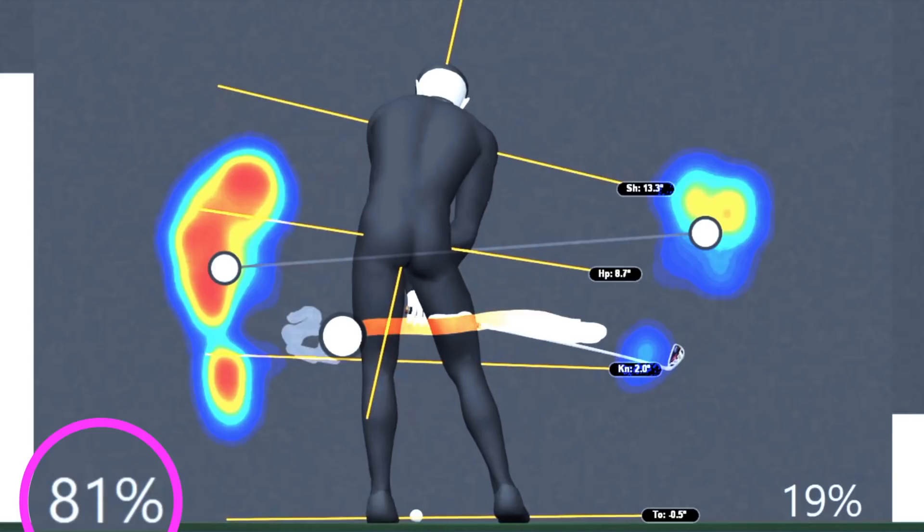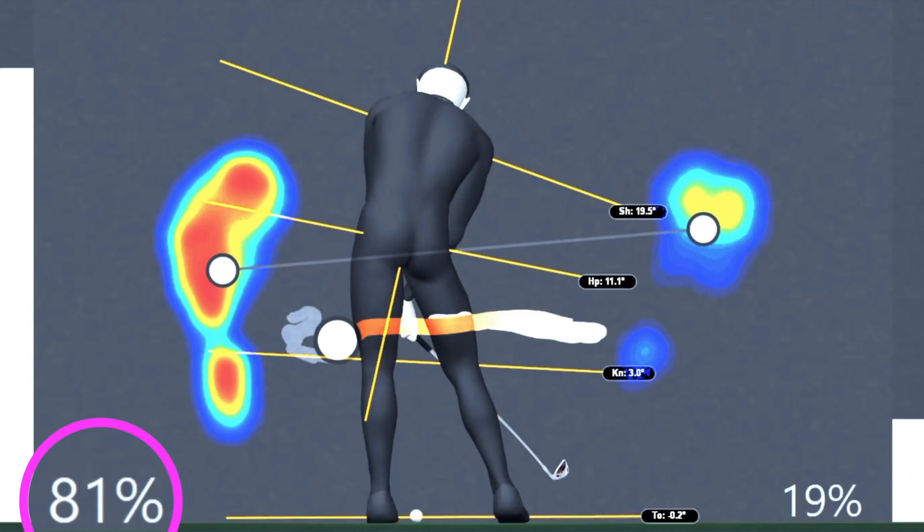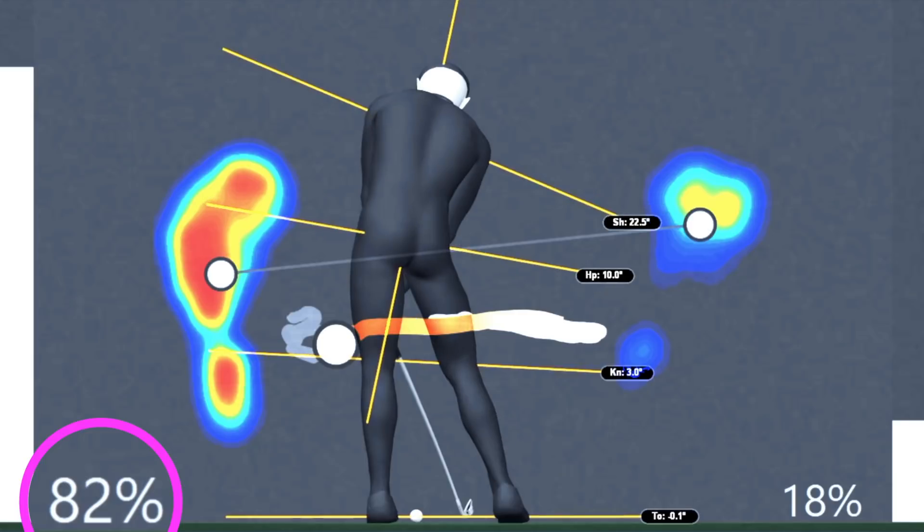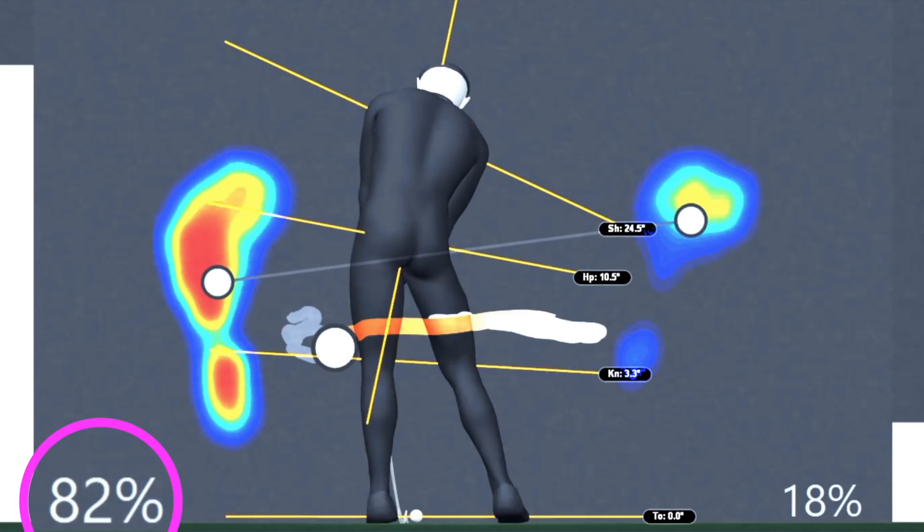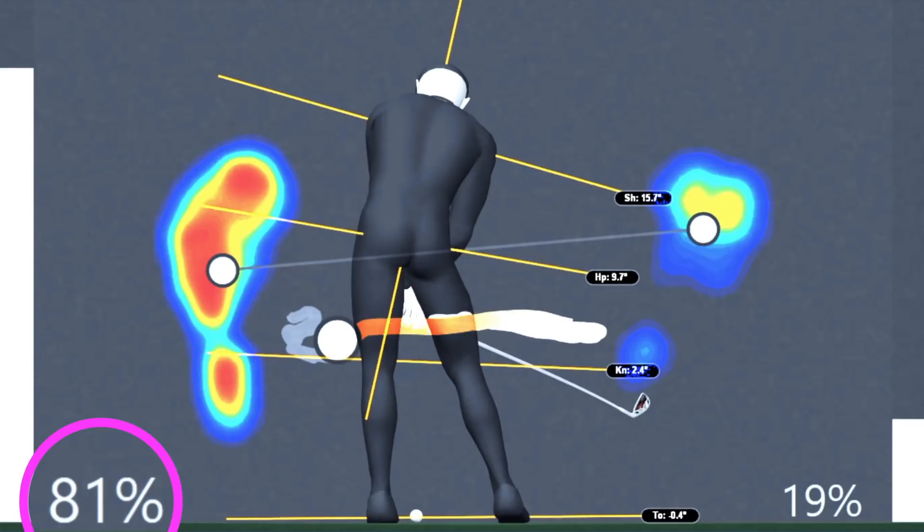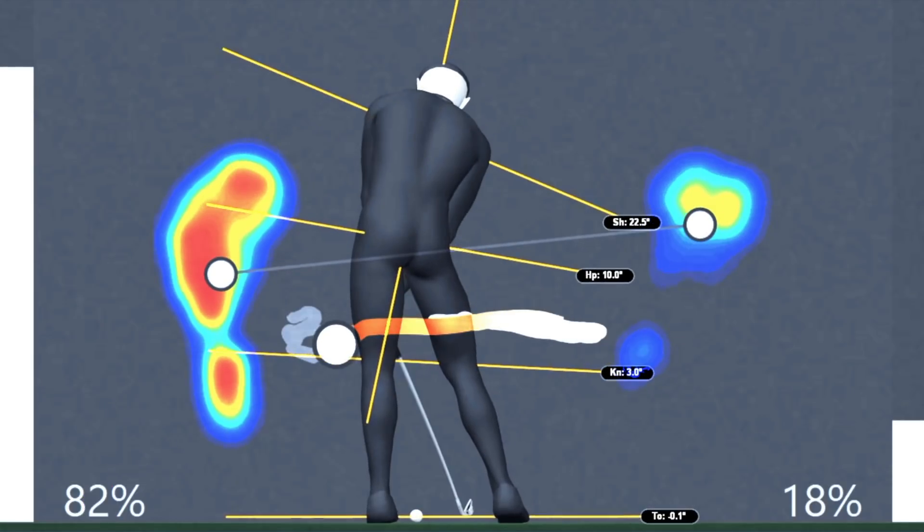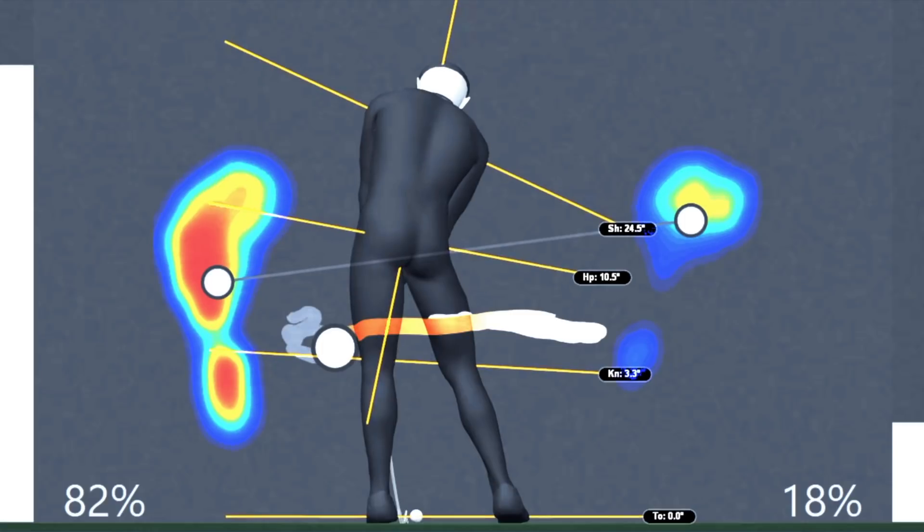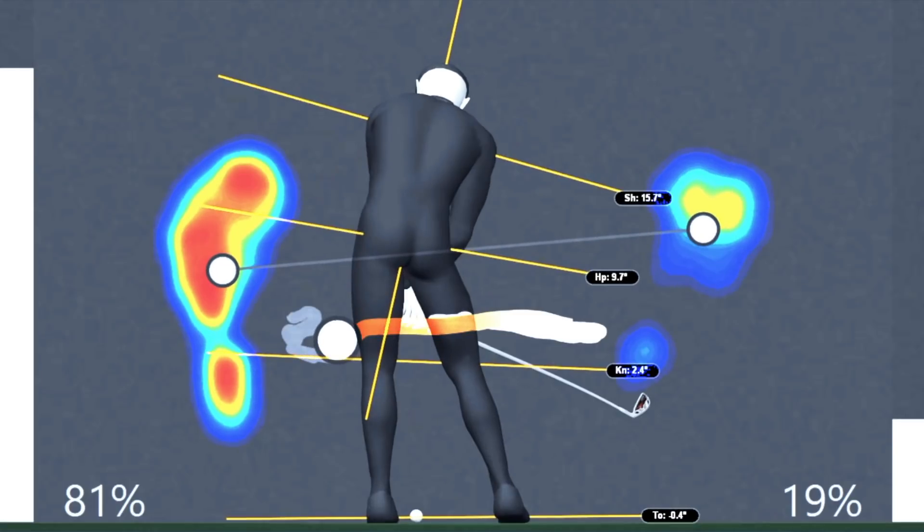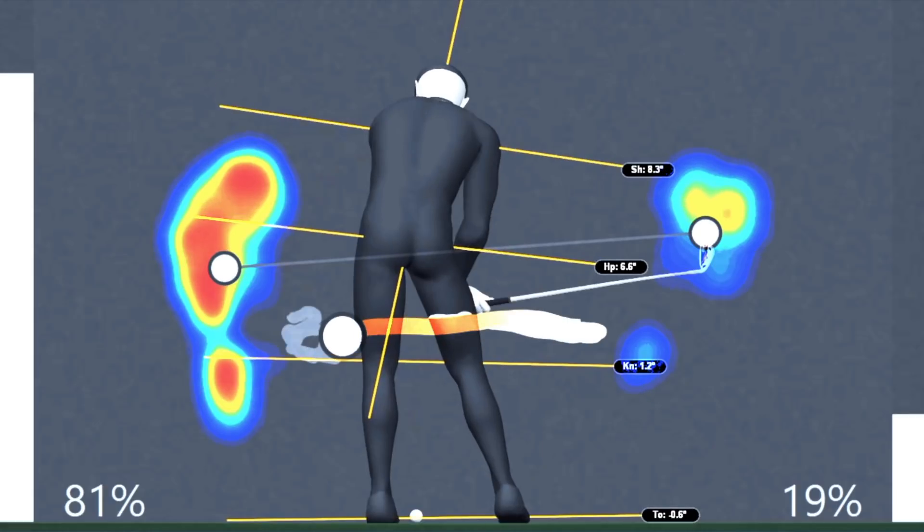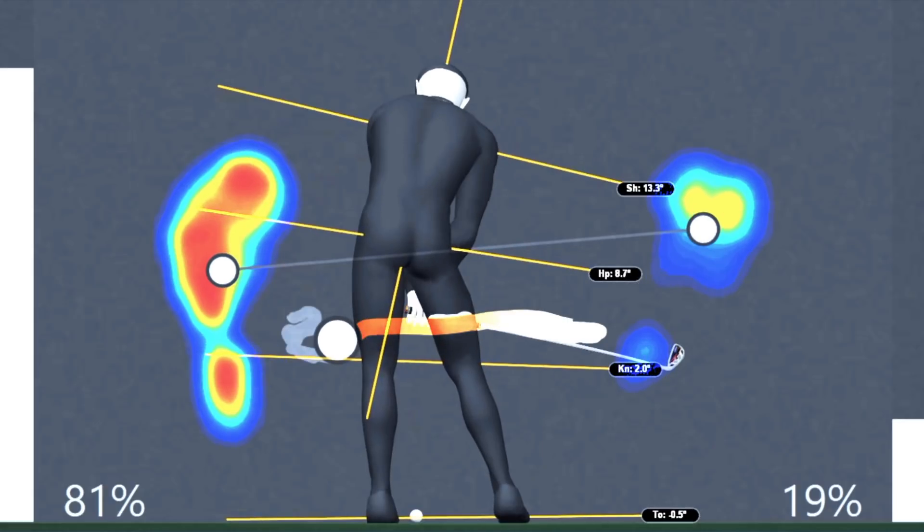He goes from 81% to 82%. So he's moved it 1% when he's delivered the club. We've seen amateur golfers move it as much as 45% during this same window. It's no wonder why players like this are some of the best ball strikers in the world and why the rest of us have a difficult time finding that sweet spot shot after shot.